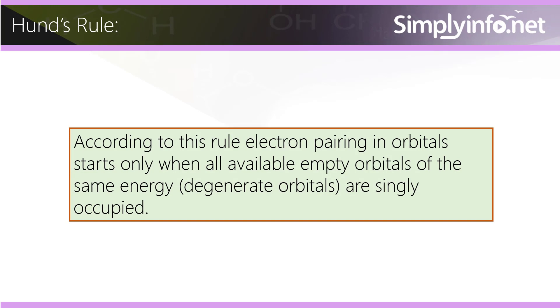Hund's Rule. According to this rule, electron pairing in orbitals starts only when all available empty orbitals of the same energy (degenerate orbitals) are singly occupied.